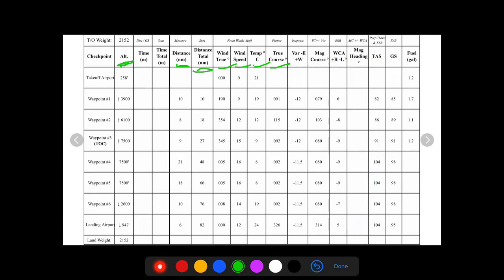So to do that it's simply you go from the magnetic course this one right here and you add the wind correction angle right here. So this is going to be 85. This one's going to be 103 minus 8, so plus negative 8, so minus 8. So that's going to be 95.